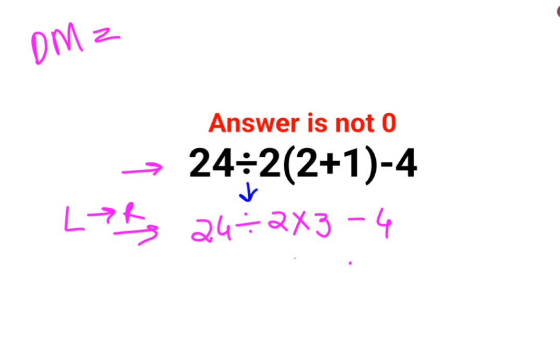First we'll do 24 divided by 2 which is 12, multiplied by 3 minus 4. 12 multiplied by 3 is 36 minus 4. The answer for this question is supposed to be 32.